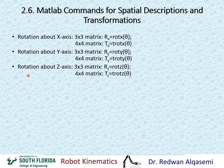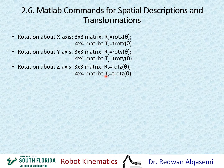If you want to do rotation about the z-axis and you'd like a 3x3 rotation matrix, then you can use rotz and input the angle of rotation. Or if you'd like a 4x4 transformation matrix, you can use trotz and input the rotation angle. Again, the translation portion would be 0, 0, and 0.